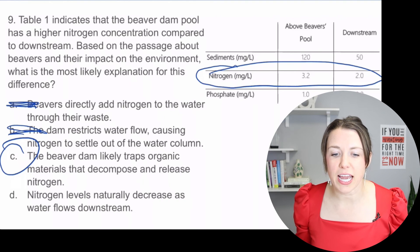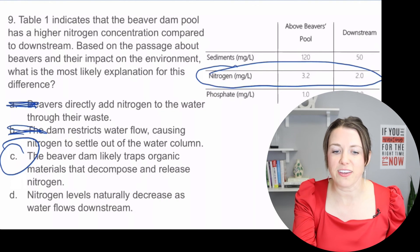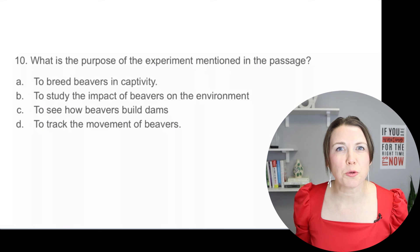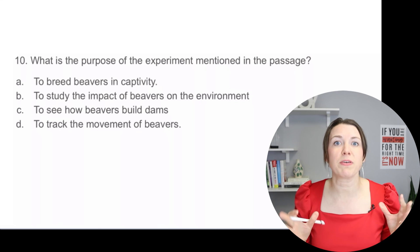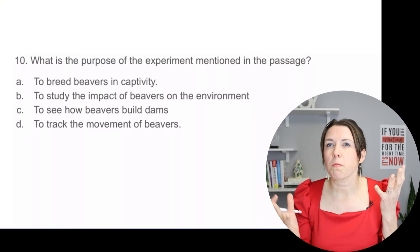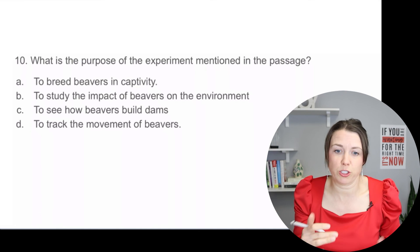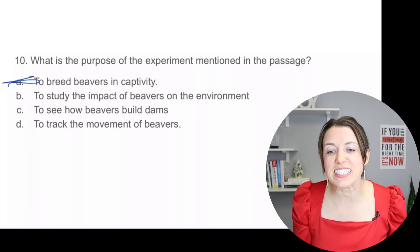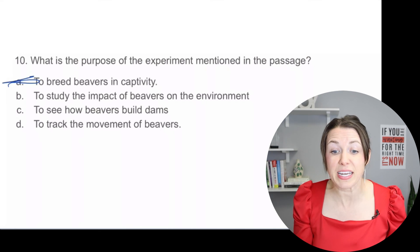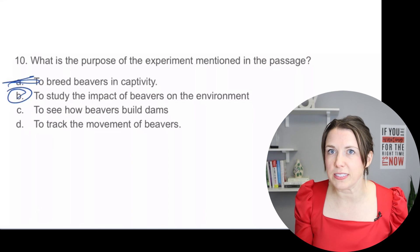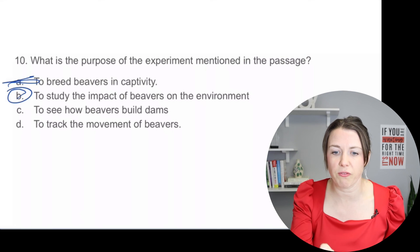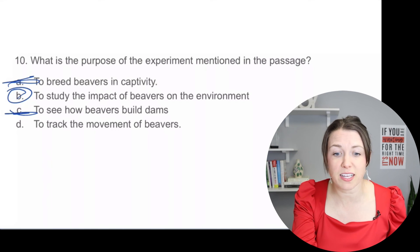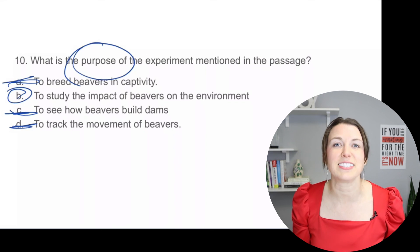What is the purpose of the experiment mentioned in the passage? Option A — to breed beavers in captivity — no, they took a male and female but wanted to see how the ecosystem changed. Option B — to study the impact of the beavers on the environment — yes. Option C — to see how beavers build dams — that's an added bonus but not the main purpose. Option D — to track the movement of beavers — I'm sure they did, but it was not the purpose. The answer is B.